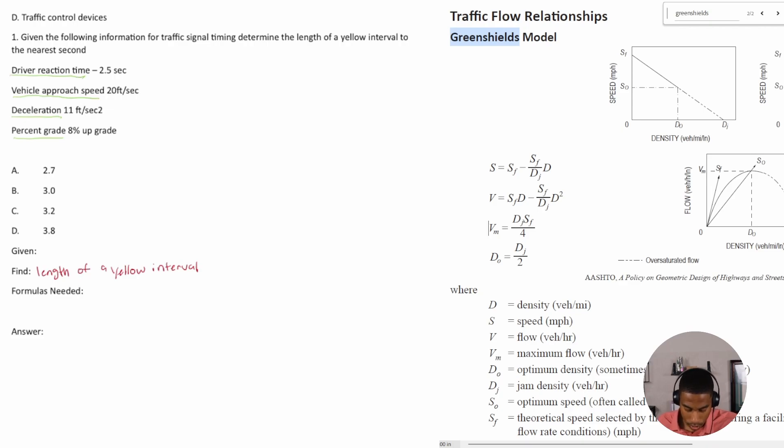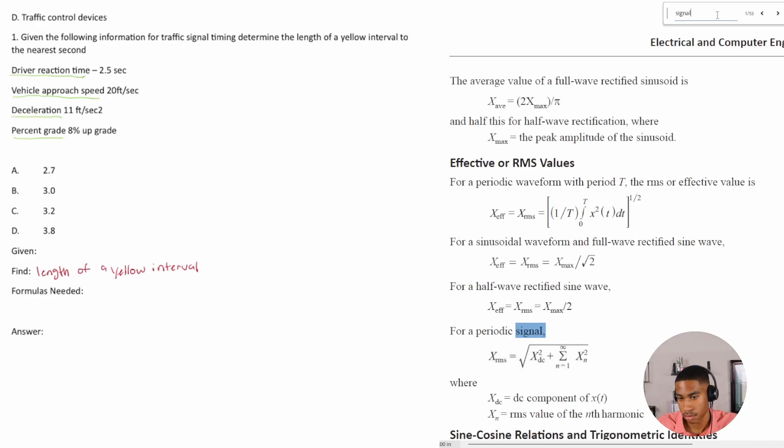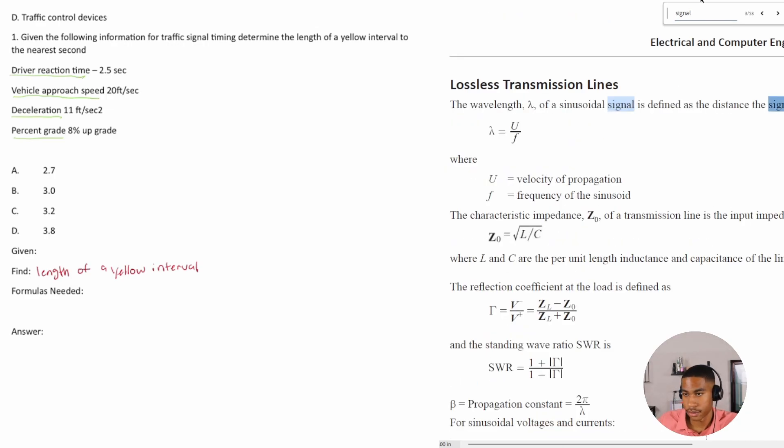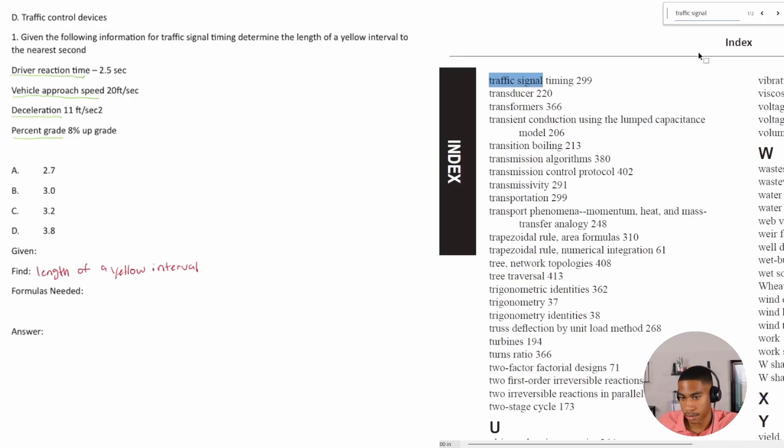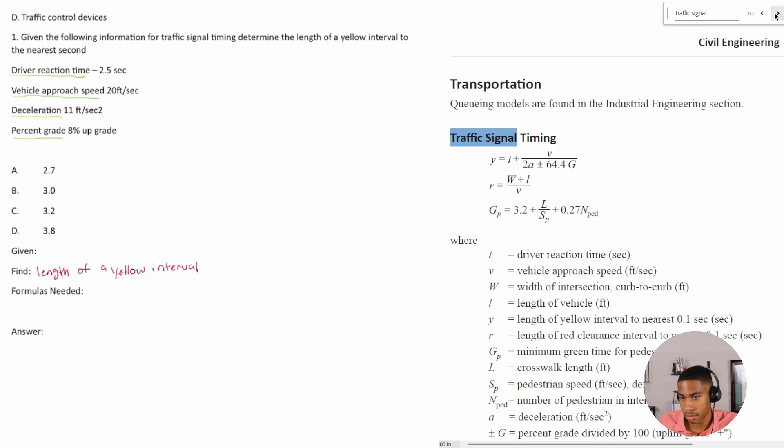Okay, so what are the formulas that we need? All right, so traffic signal timing. I'm just going to search in my FE handbook 'signal'. And let's see what comes up. All right, so 53 things come up, so I'll do traffic signal. All right, only two things come up.